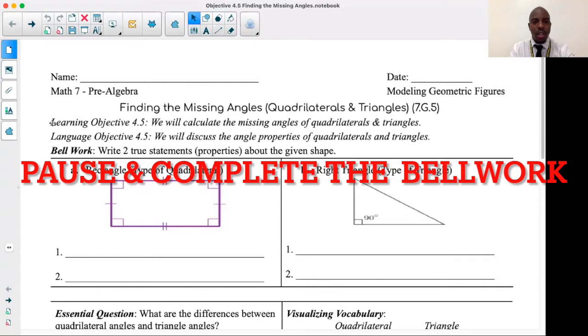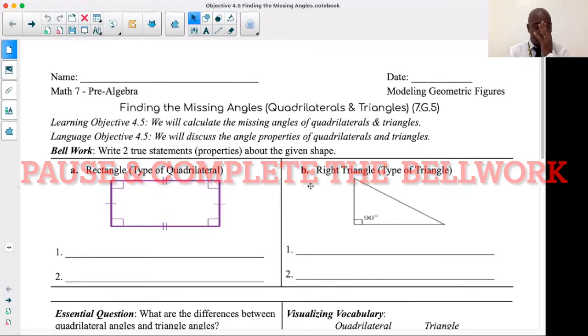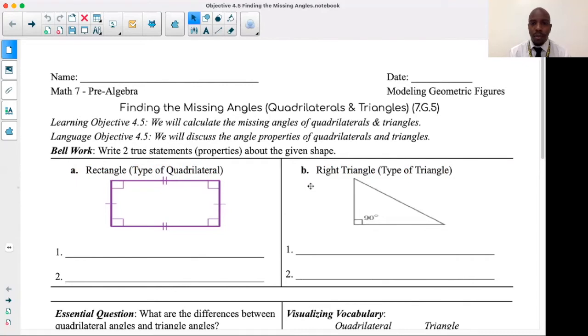So as usual, do me a favor please join me by looking at the actual packet, open up 4.5. As usual, any of the worksheets, take a moment, pause the video if you need to and fill out the bellwork. It's asking you to write two true statements and properties that you know about these particularly given shapes.